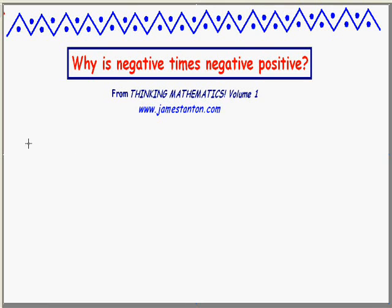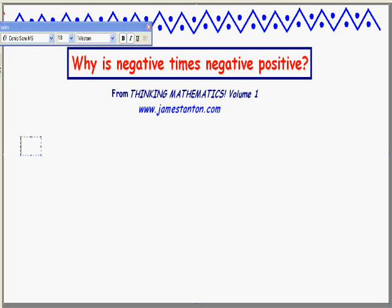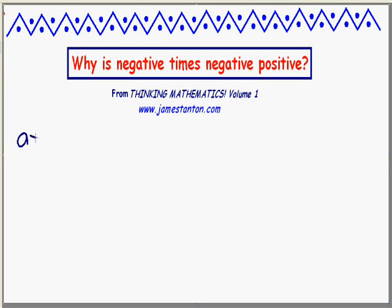One begins by listing the rules of arithmetic that one thinks should be true. For example, we've already established that we'd like to think that a times b is the same as b times a. We have a reason to believe that's true for positive counting numbers. We'd like to extend that law to negative numbers as well.